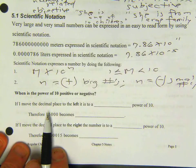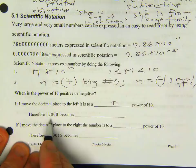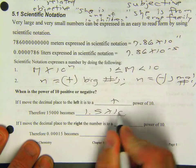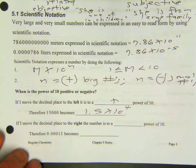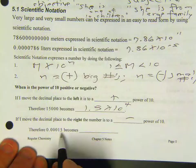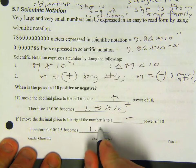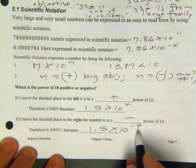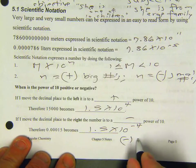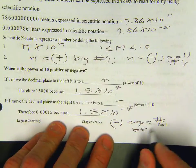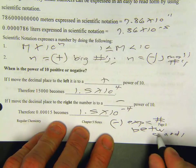So a decimal place to the left, it is a positive power of 10. Therefore, 1, 2, 3, 4. So times 10 to the 4th. If I move a decimal place to the right, it is a negative power of 10. Therefore, 1, 2, 3, 4. This is 1.5 times 10 to the minus 4th. Again, if you have a negative exponent, negative exponent equals a number between 0 and 1. That's page 1. You guys are doing quite well.